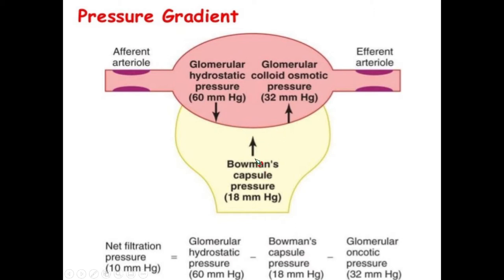In the Bowman's capsule there is only one pressure — hydrostatic pressure — and this is just 18 mmHg. The forces trying to retain fluid within the glomerulus are two: the oncotic pressure in the glomerulus and the Bowman's capsule hydrostatic pressure. Both of these upward arrows are against filtration. Adding them: 32 plus 18 gives the figure of 50.